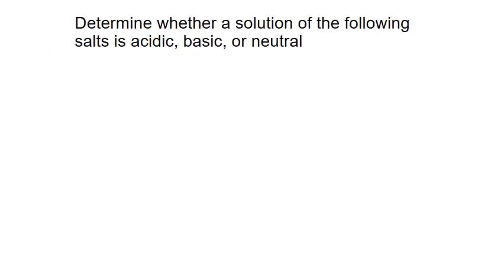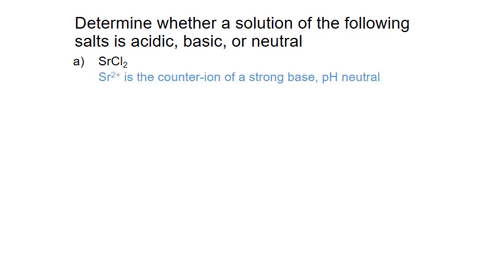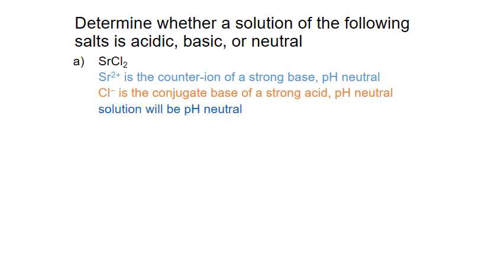Let's examine a few examples. To determine whether a solution of a salt is acidic, basic, or neutral, we first separate it into its individual cation and anion. Starting with strontium chloride — the cation is strontium with a 2+ charge, which is the counter ion of a strong base, strontium hydroxide, and is therefore considered pH neutral. The anion is chloride ion, the conjugate base of the strong acid hydrochloric acid, HCl, and is therefore also considered pH neutral. Since neither cation nor anion contributes to the pH of the solution, the solution will be neutral overall.